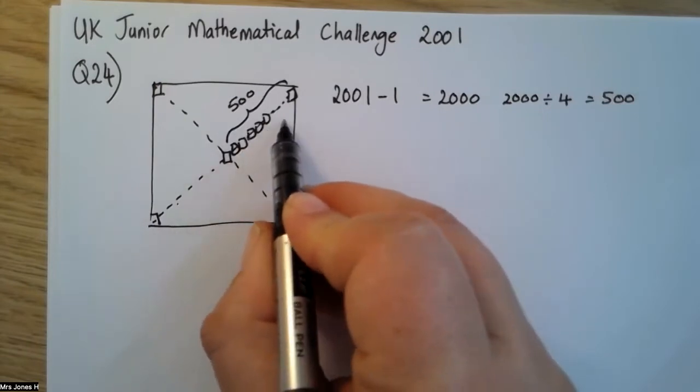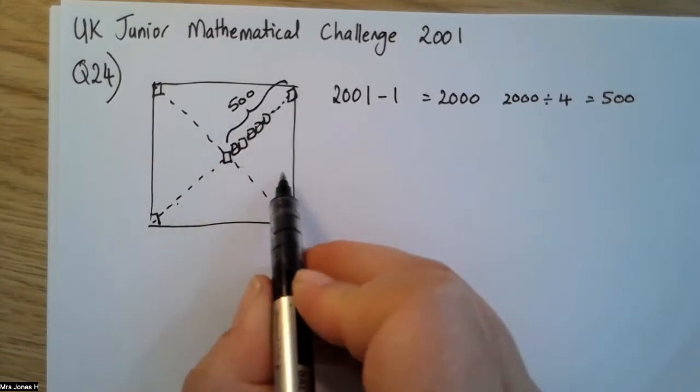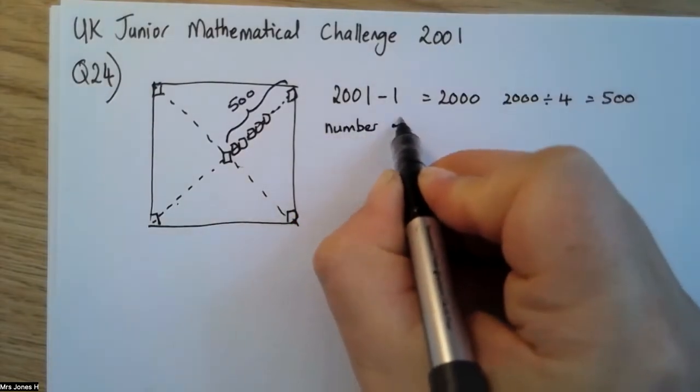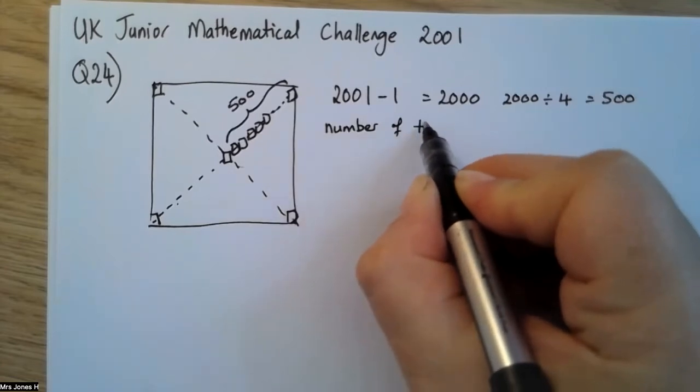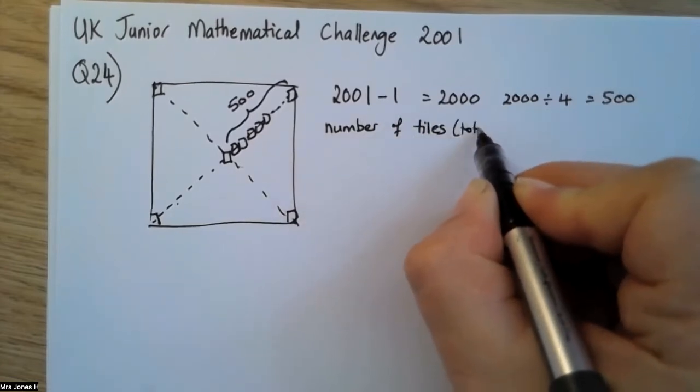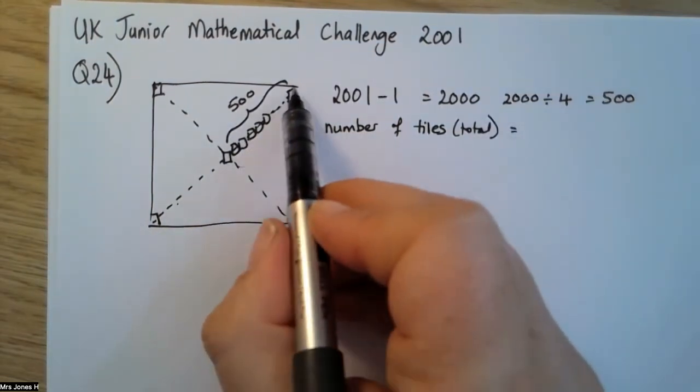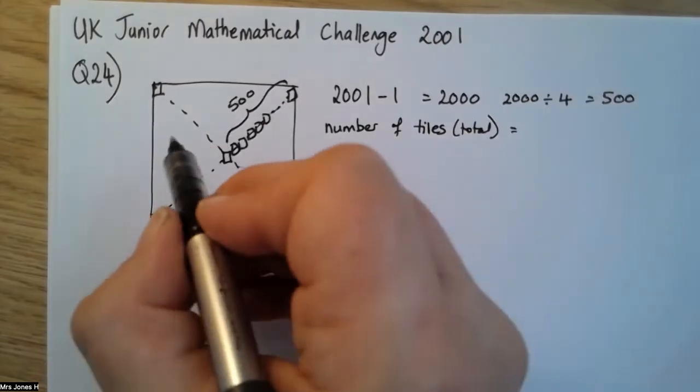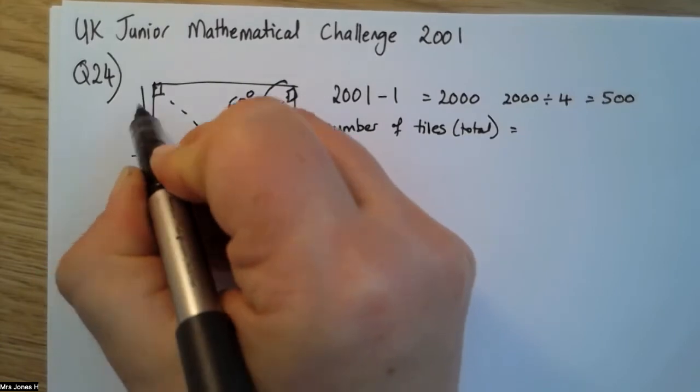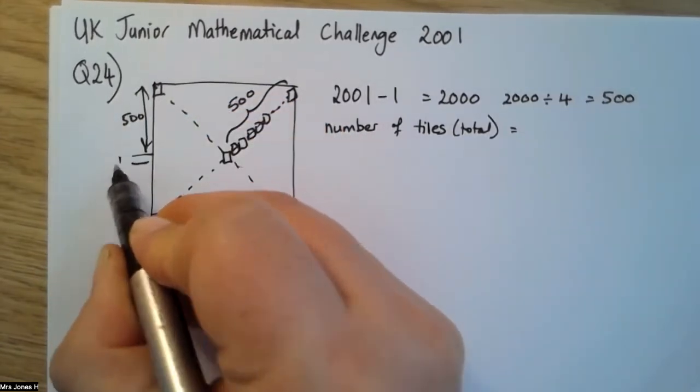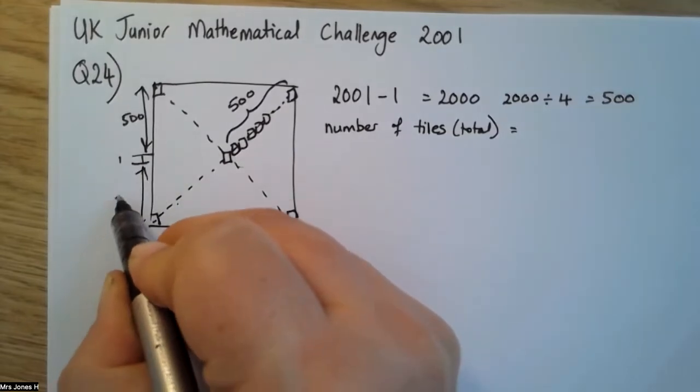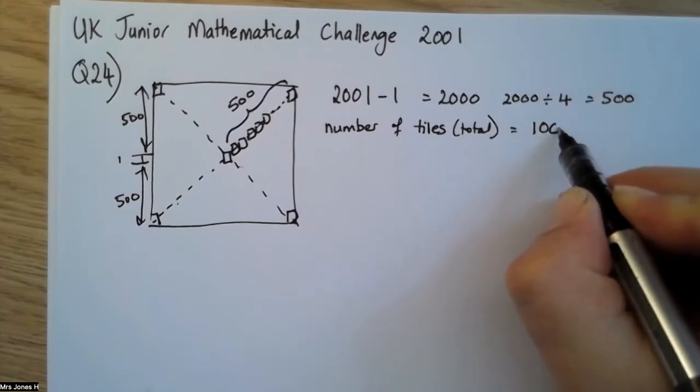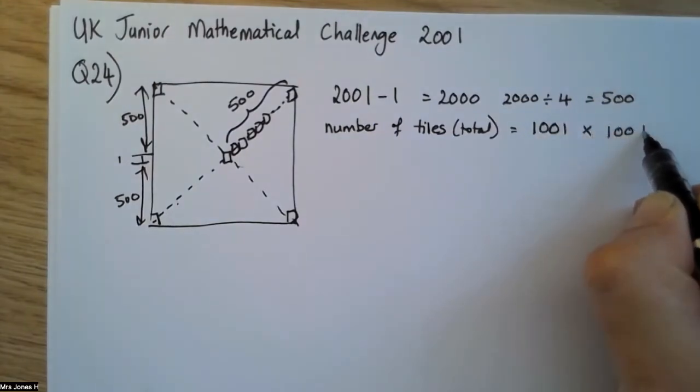That means there are 500 rows above this blue tile and there are 500 rows below that blue tile. So the number of tiles in total, ignoring which are blue and which are red, we know that there needs to be 500 here, one here, and then 500 here. So the sides of my square are going to be 1001 multiplied by 1001.